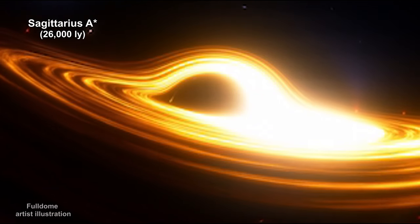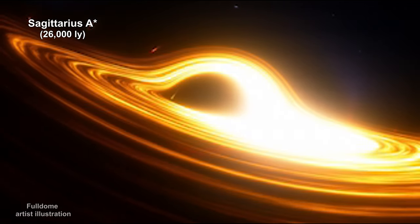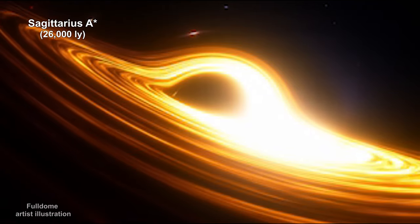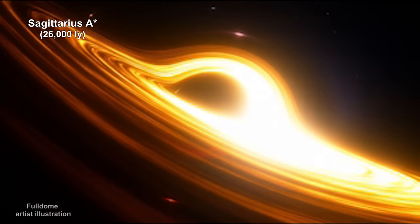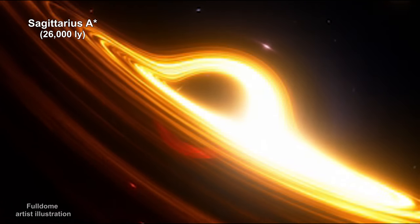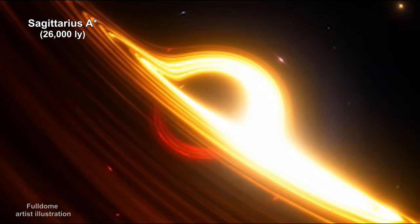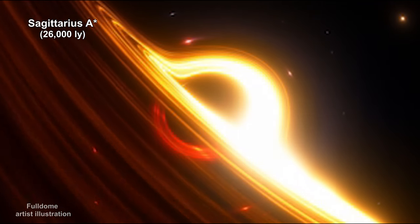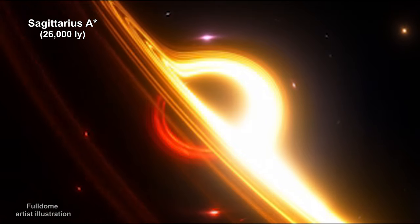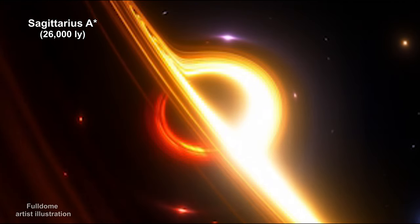There are three classifications for black holes based on their mass. Stellar, with masses up to 10 times the mass of our Sun. Supermassive, with millions or even billions of times the mass of our Sun. And Intermediate, with masses somewhere in between.